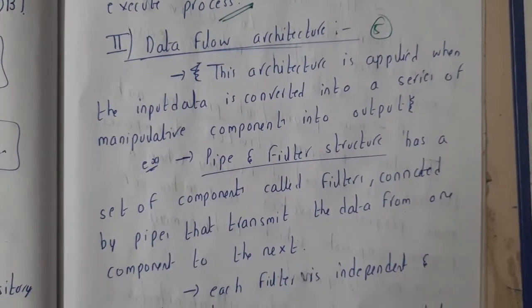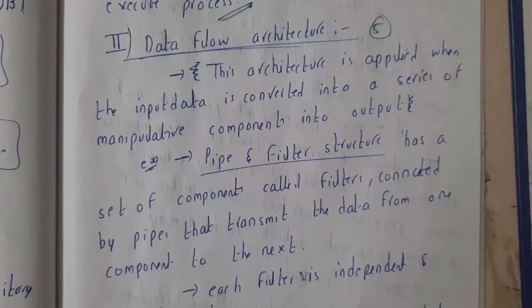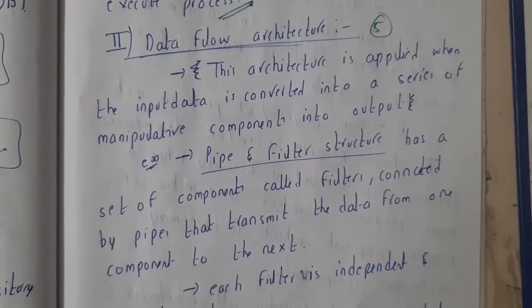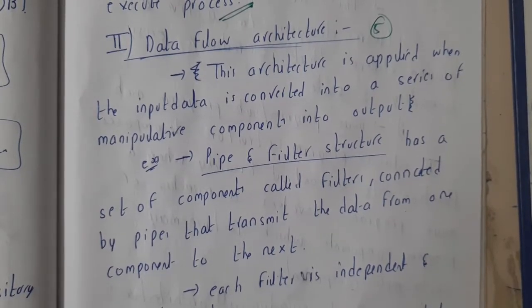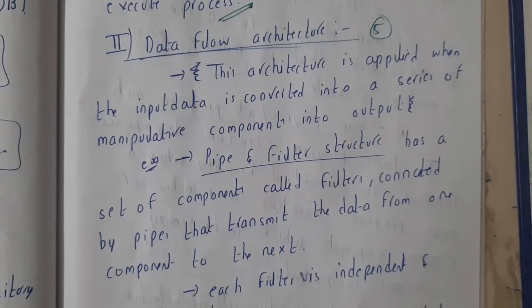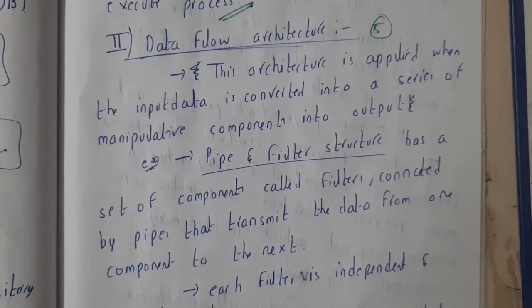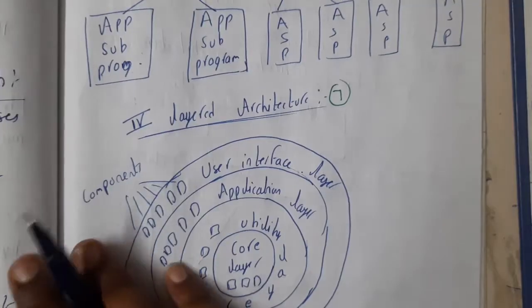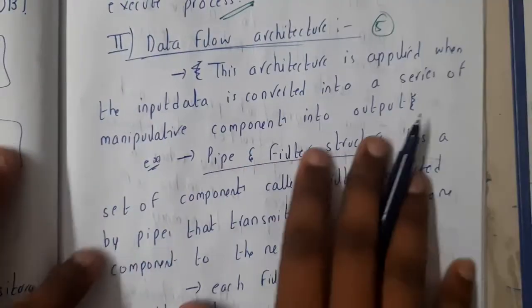Hello guys, we are back with our next lecture. In this lecture, let us go through data flow architecture. Basically, data flow architecture - from the name we can say that data is flowing in some particular path. The best example for this architecture is nothing but pipe and filter. I'll be discussing about that, don't worry.